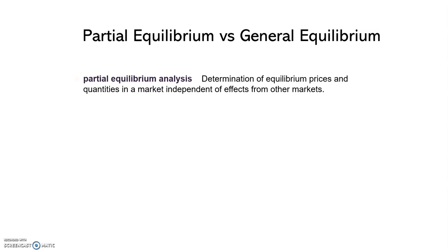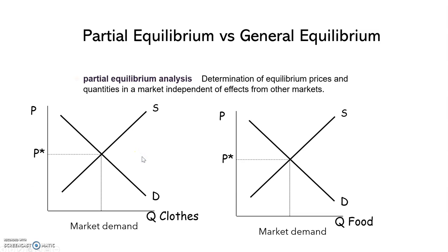Unlike the partial equilibrium analysis, general equilibrium analysis is going to determine the prices and the quantities in all markets simultaneously. So, if we talk about partial equilibrium analysis, we can talk about only the equilibrium in the market of clothes, or only the equilibrium in the market of food. Or we can talk about the equilibrium in the market of oil, independently from the equilibrium in the market of gas.